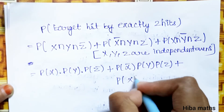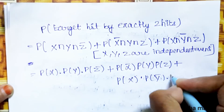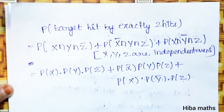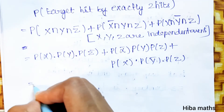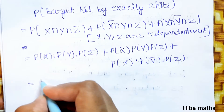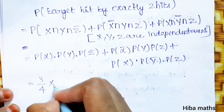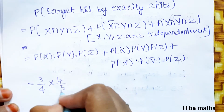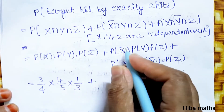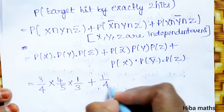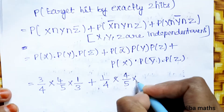Substituting values: P(X) = 3/4, P(Y) = 4/5, P(Z̄) = 1/3. Plus P(X̄) = 1/4, P(Y) = 4/5, P(Z) = 2/3. Plus P(X) = 3/4, P(Ȳ) = 1/5, P(Z) = 2/3.